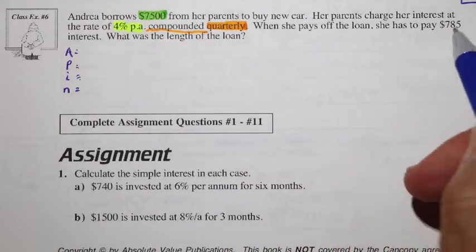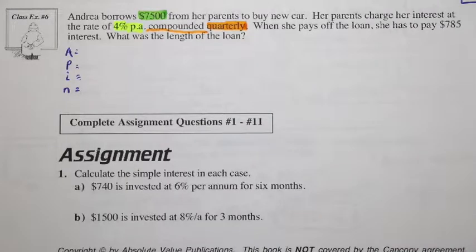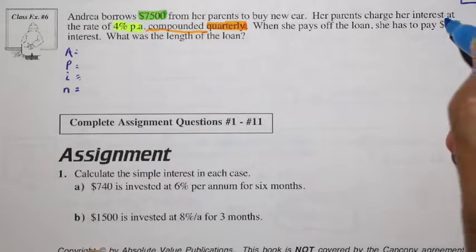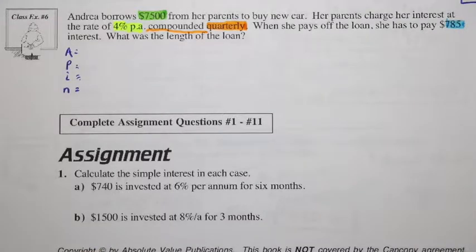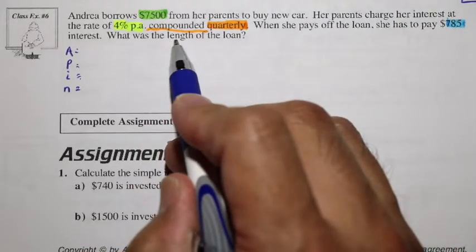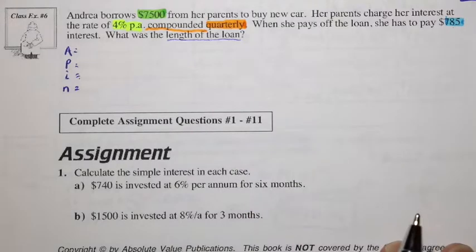When she pays off the loan, she has to pay this amount. So that's also important. It means that this is the total amount of interest that was paid. And of course, in the end, we're going to have to find out what the length of the loan is.